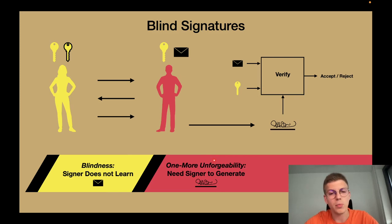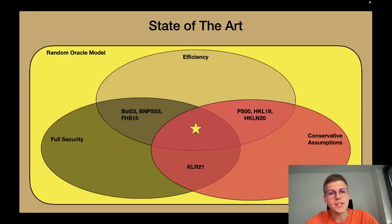So this is a very useful primitive. It has a lot of applications in electronic payment systems for example or in voting. The problem is that the state of the art in terms of constructions is not very satisfying. Although we have efficient constructions, these either rely on non-standard and strong assumptions or they only support a small number of signatures while staying secure, typically a logarithmic number of signatures. Our goal in this work is to close this gap and find a scheme that is efficient, has full security and only makes use of conservative well-known assumptions.